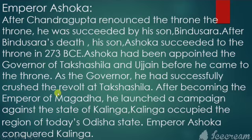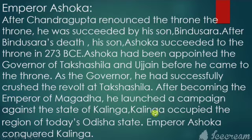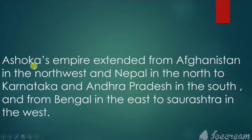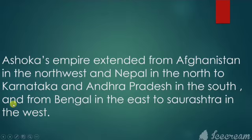As governor, Ashoka successfully crushed a revolt at Takshashila. After becoming the emperor of Magadha, he launched a campaign against the state of Kalinga, which occupied the region of today's Odisha state, and conquered it. Ashoka's empire extended from Afghanistan in the northwest and Nepal in the north, to Karnataka and Andhra Pradesh in the south, and from Bengal in the east to Saurashtra in the west.